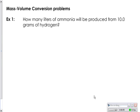This is an example of a mass-volume conversion problem in stoichiometry. If you read example 1, it states how many liters of ammonia will be produced from 10 grams of hydrogen.